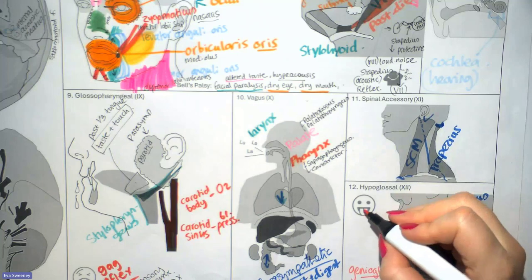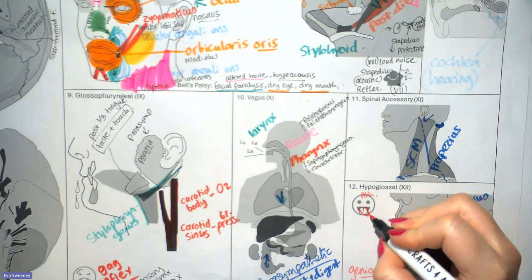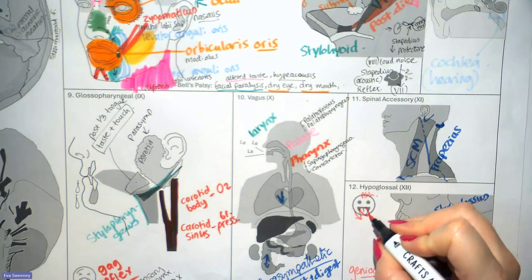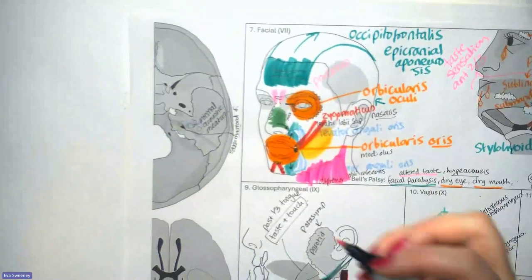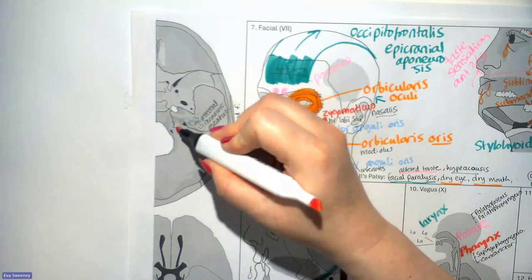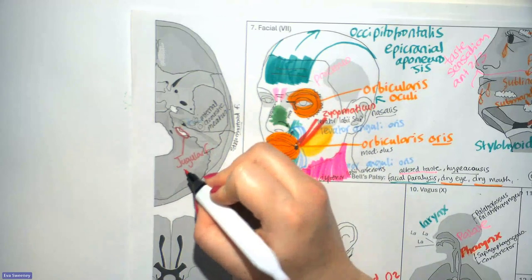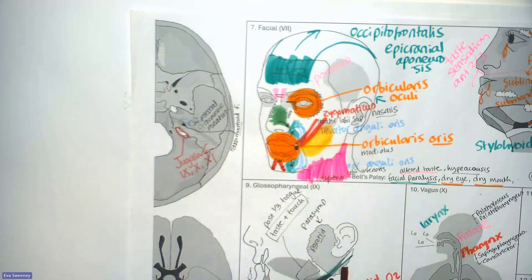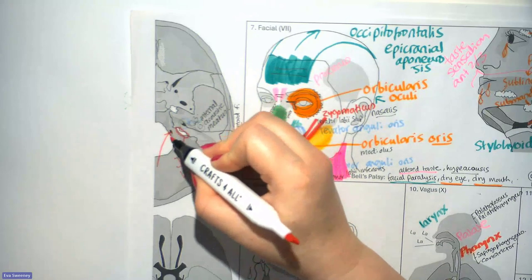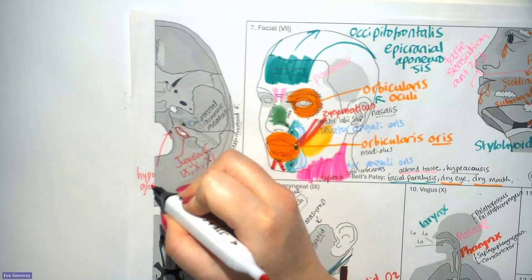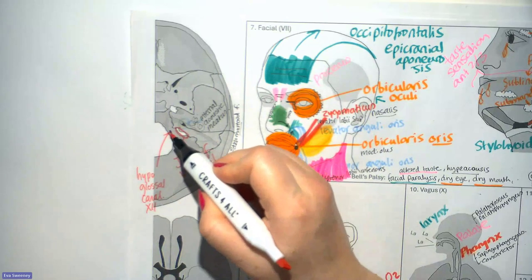To test the hypoglossal nerve, you ask the patient to stick their tongue out and say 'ah'. If the tongue deviates to one side, it means only one side is working, and the tongue usually deviates to the bad side. Cranial nerves 9, 10, and 11 pass through the jugular foramen, alongside the structures forming the internal jugular vein. The hypoglossal canal is just to the side of the foramen magnum, and that is where cranial nerve 12 passes through.